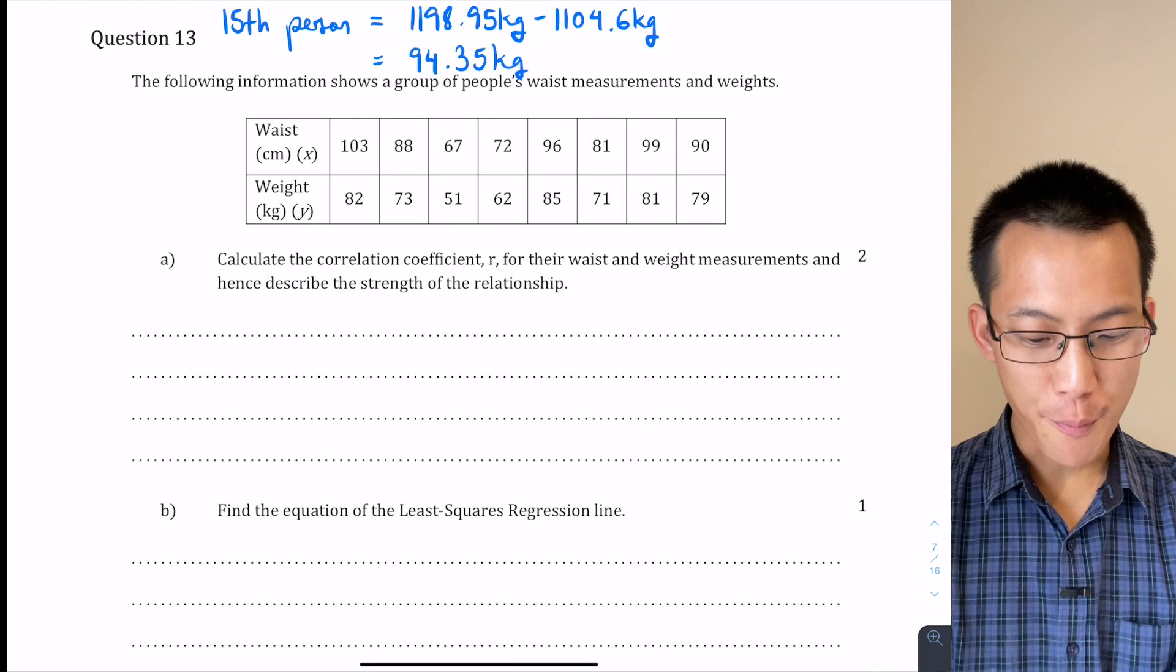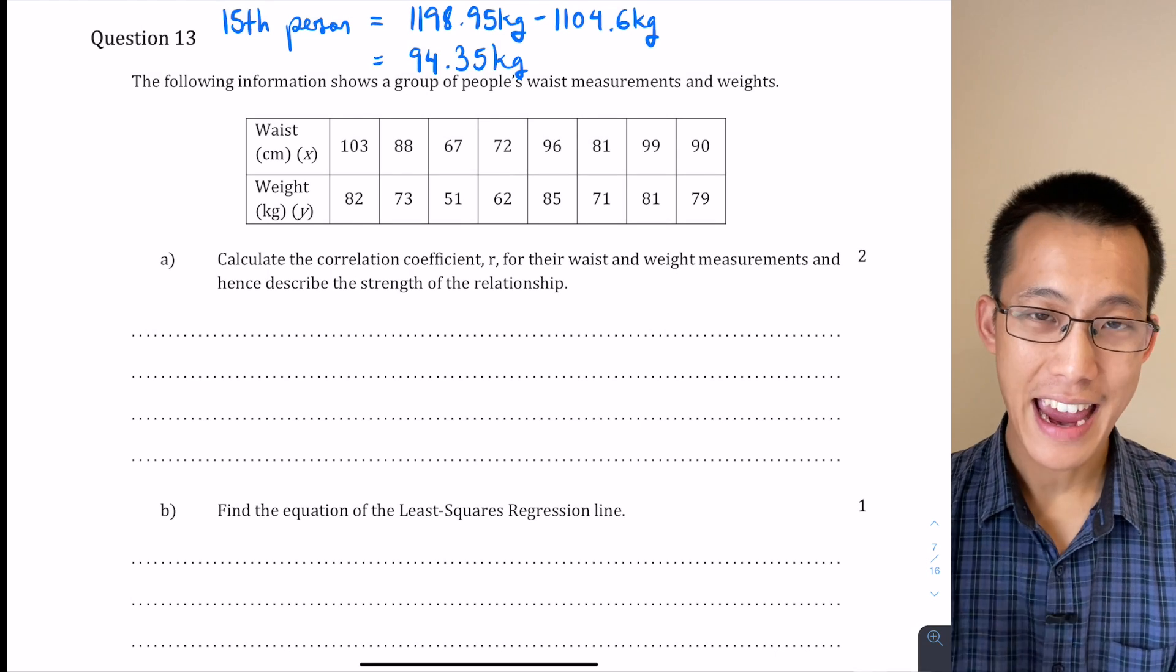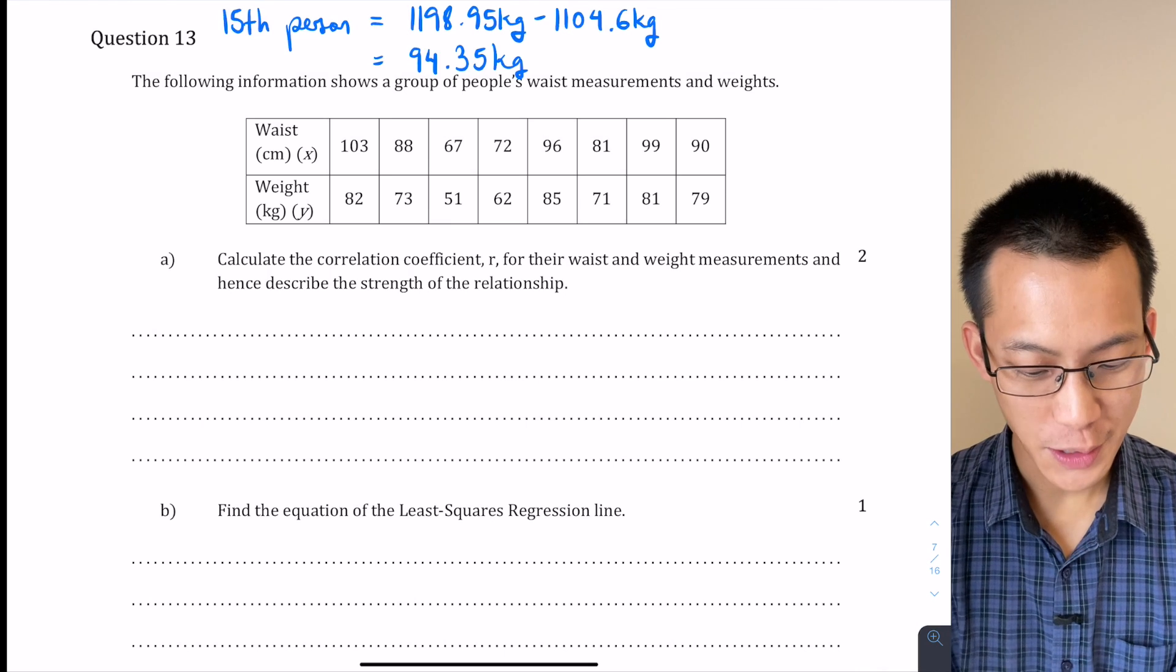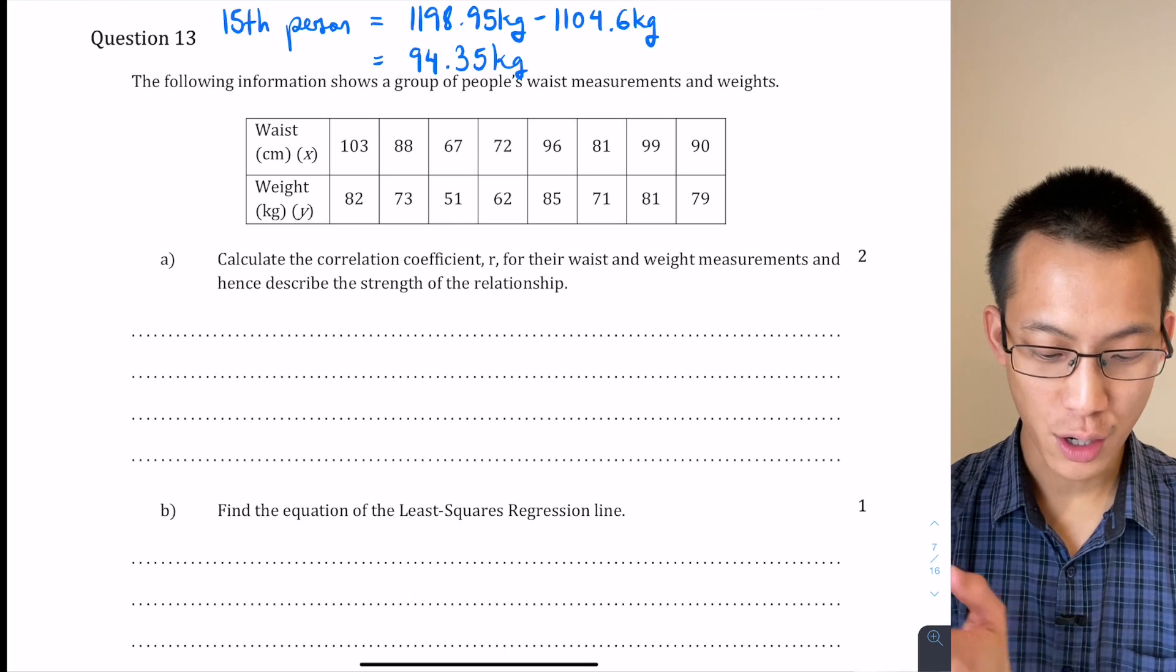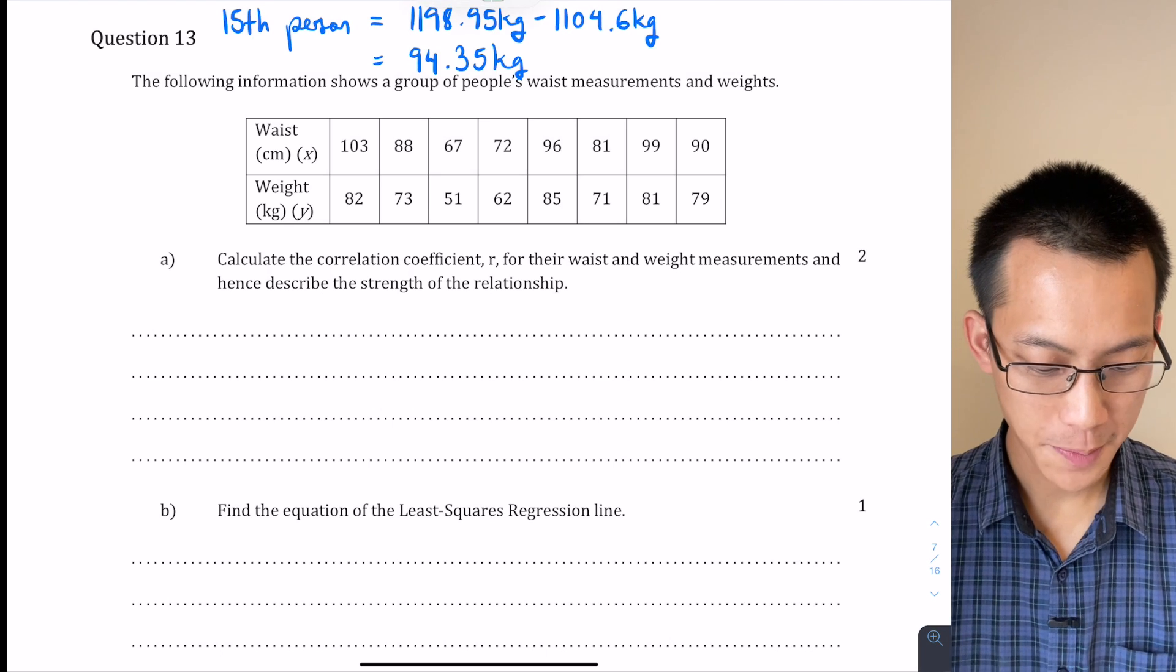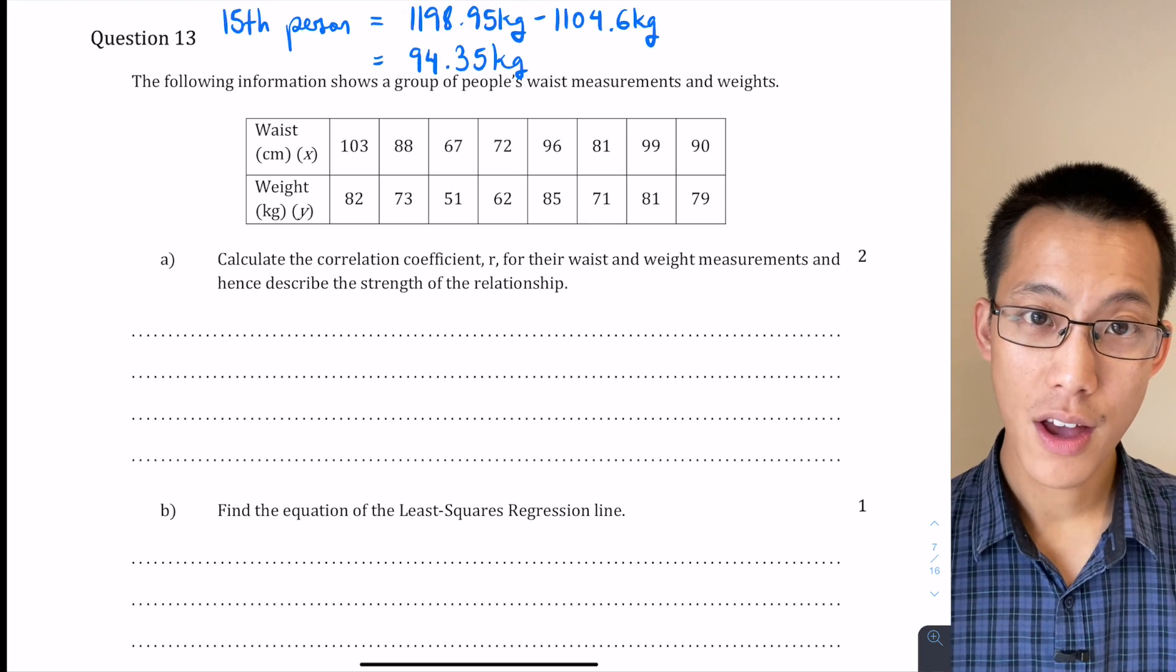The following information shows a group of people's waist measurements and weights and then you can see the table below. Now what we're being asked to do is calculate a correlation coefficient R for the waist and weight measurements and then we'll use that to describe the strength of the relationship.